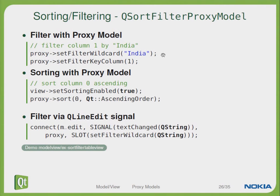Let's take a look at the sorting and filtering functions within our proxy model. You can use SetFilterWildcard or SetFilterKeyColumn to identify what data you would like to filter. If you want to sort your data, you can turn it on with SetSortingEnabled set to true, and tell the model which column to sort and in which order. For instance, if you want to filter a model via a QLineEdit signal, you just connect the LineEdit's textChanged signal to the SetFilterWildcard of your proxy model.